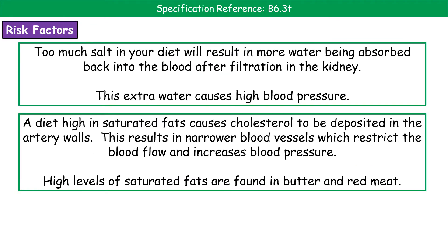Risk factors for cardiovascular disease include a diet high in salt, which draws more water into your blood and raises blood pressure. A high saturated fat diet leads to cholesterol being deposited in artery walls, narrowing the blood vessels, restricting blood flow, and increasing blood pressure — this comes from eating large quantities of butter, red meat, and similar foods.